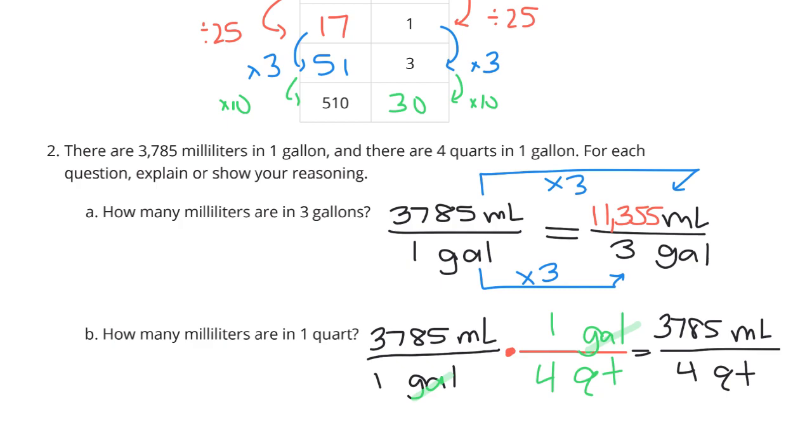Now, to finish the question, we do need to take 3,785 and divide it by four to get a solution of 946 and 25 hundredths milliliters in that one quart. And I got that by dividing by four.